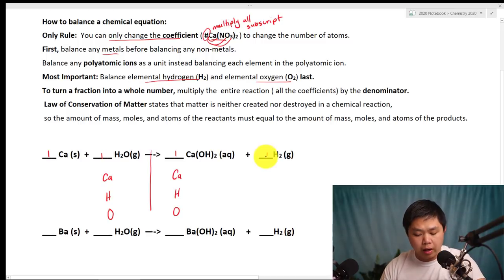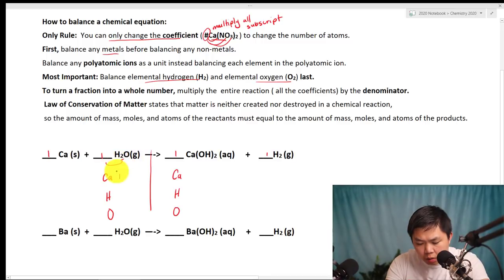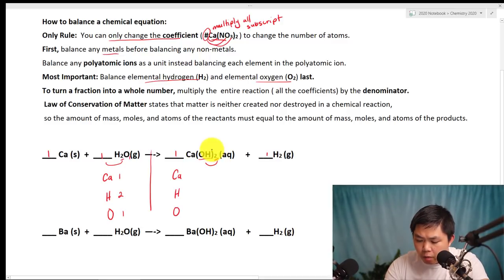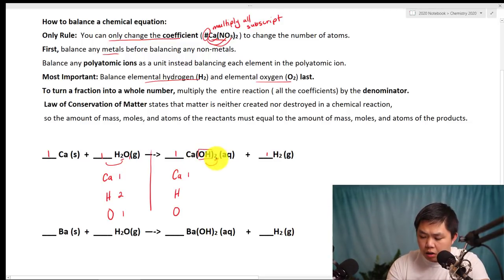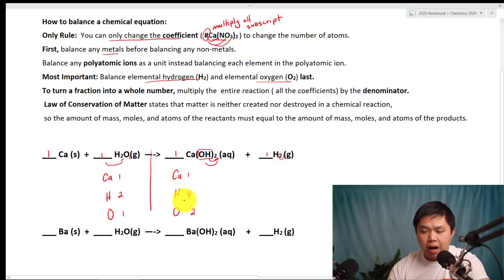With every coefficient equal to one: for calcium, one times one is one. For hydrogen, two times one gives us two. For oxygen, one times one gives us one. On the product side, we have calcium — just one, because the two only applies to whatever is inside the parentheses. For oxygen, two times one gives you two. For hydrogen, two times one gives you two, but we also have another two, so that gives us a total of four.